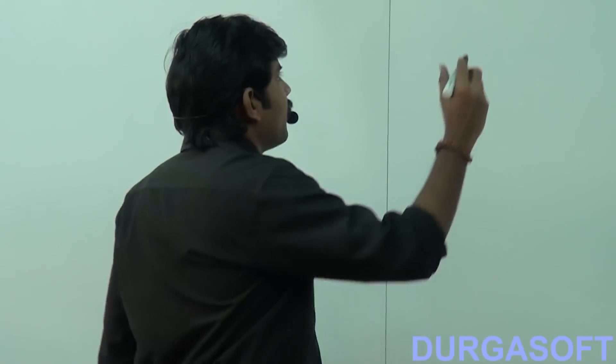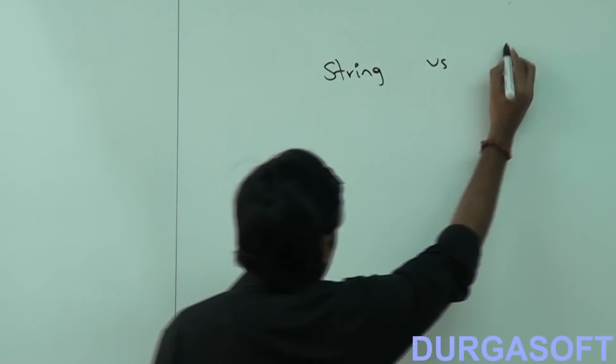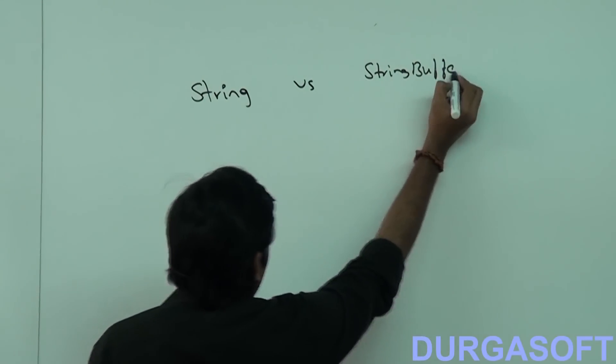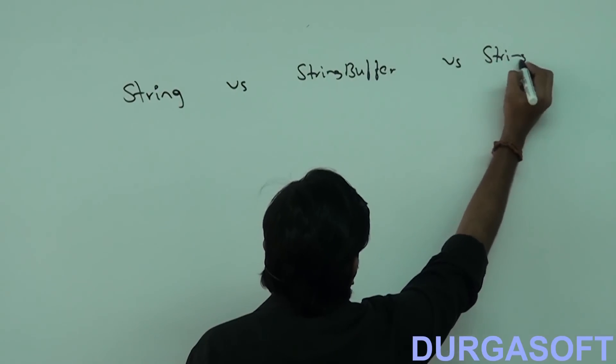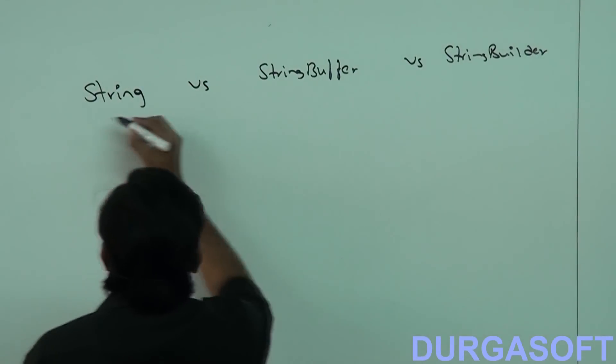The next most important question: String, StringBuffer, StringBulder — these are the three things which are available. When we should go for String, when we should go for StringBuffer, and when we should go for StringBuilder.